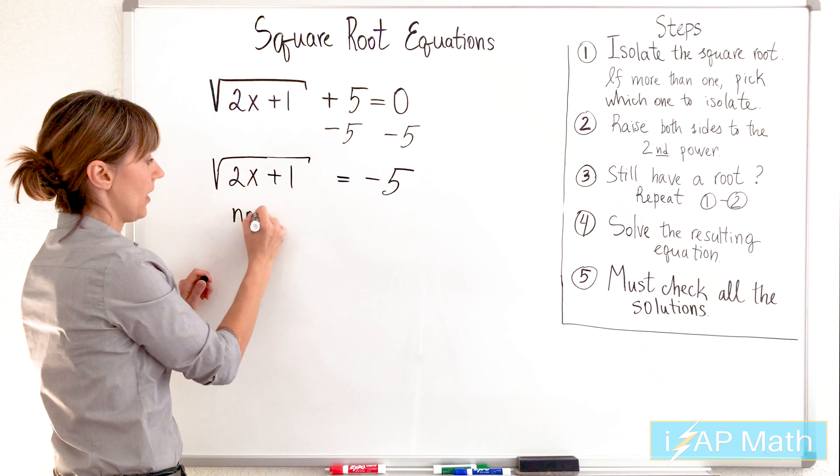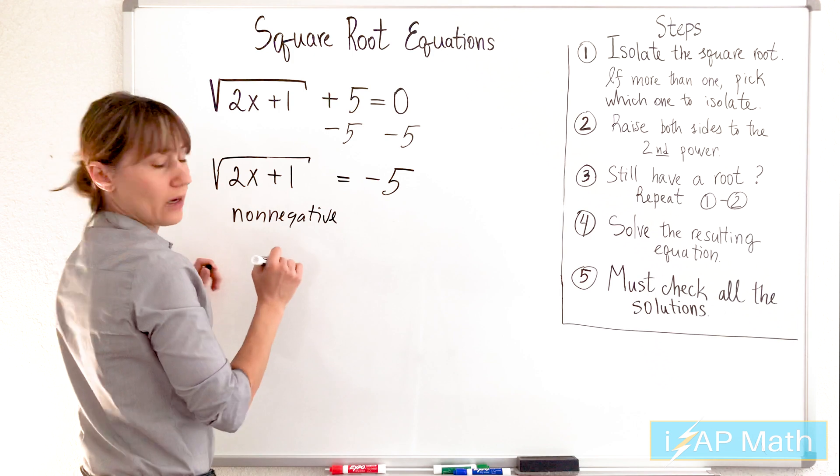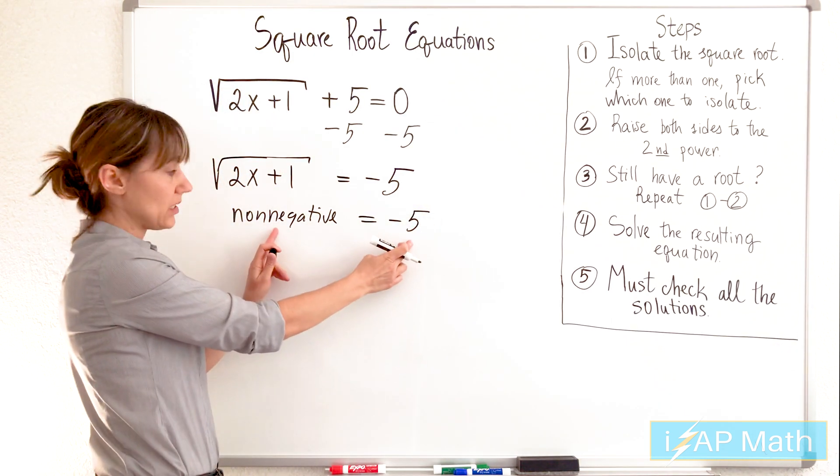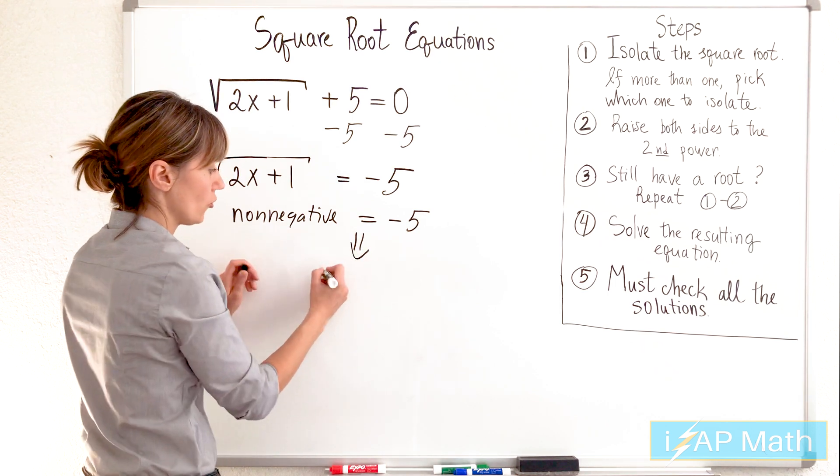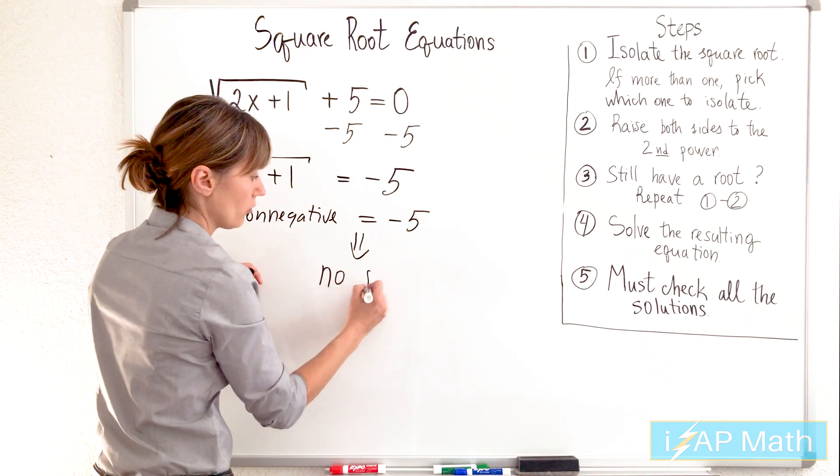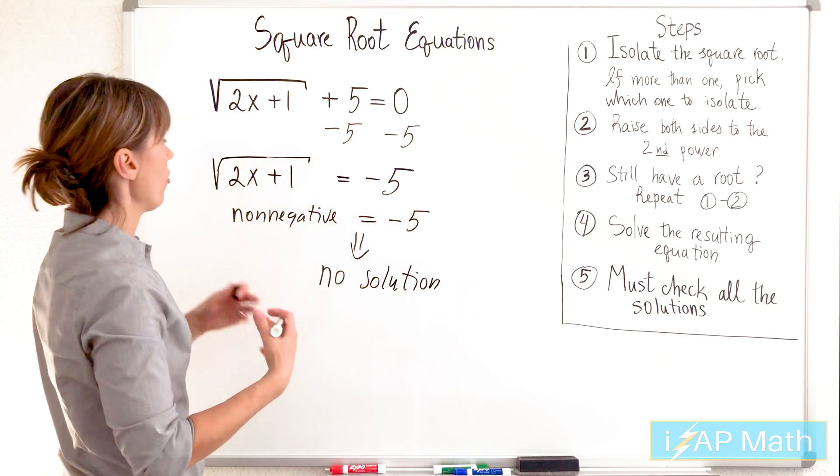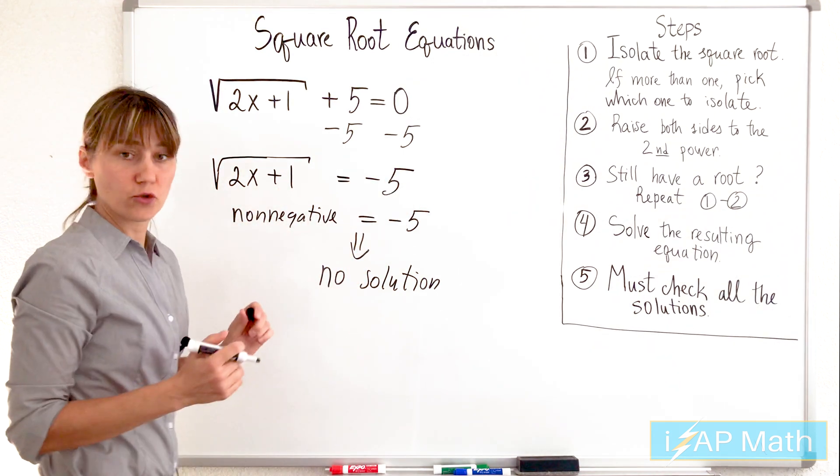So we have non-negative number on the left-hand side, and here it is equal to negative 5. We see that it is a false statement, and this false statement should lead to no solution. No solution. So this equation has no solution. There is no number that we can substitute for x that will make this equation true.